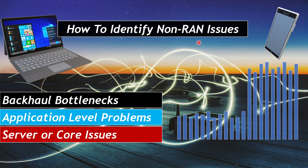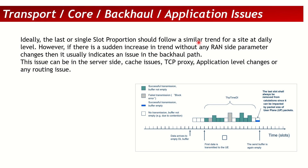The goal is to identify that an issue is not a RAN issue but more of a backhaul, core, or application-level issue. I must say it's not a 100% thing, but in my personal experience I found it correct around 80% of the time. Let's see why and how it works — the theory behind it — and how we can use it in KPI optimization or troubleshooting.